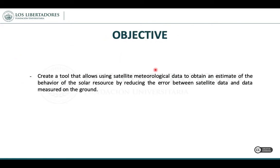Our objective with this work is to create a tool that allows using satellite meteorological data to obtain an estimate of the solar radiation results, reducing the error between the satellite data and the data measured on land. Our goal is to replicate the land measurement with a forecasting model.